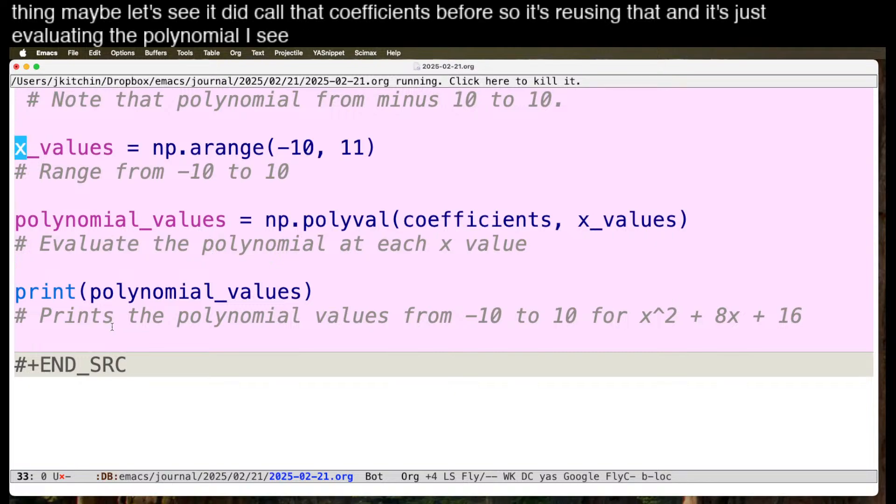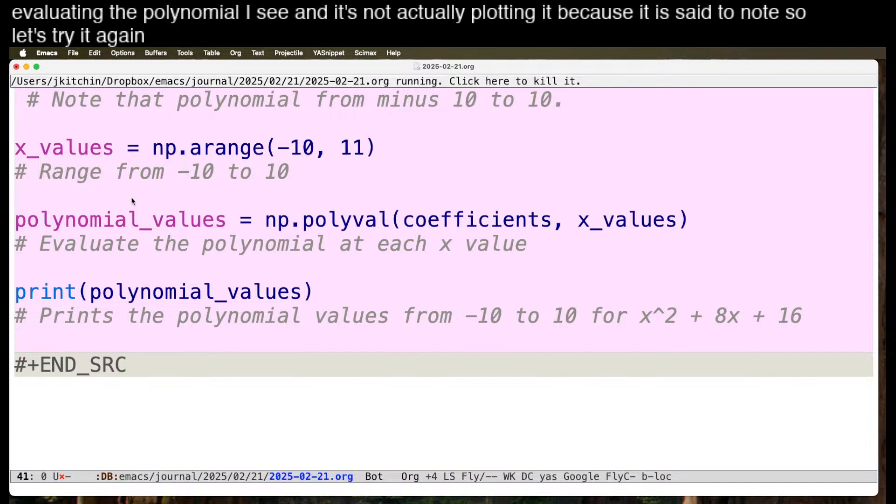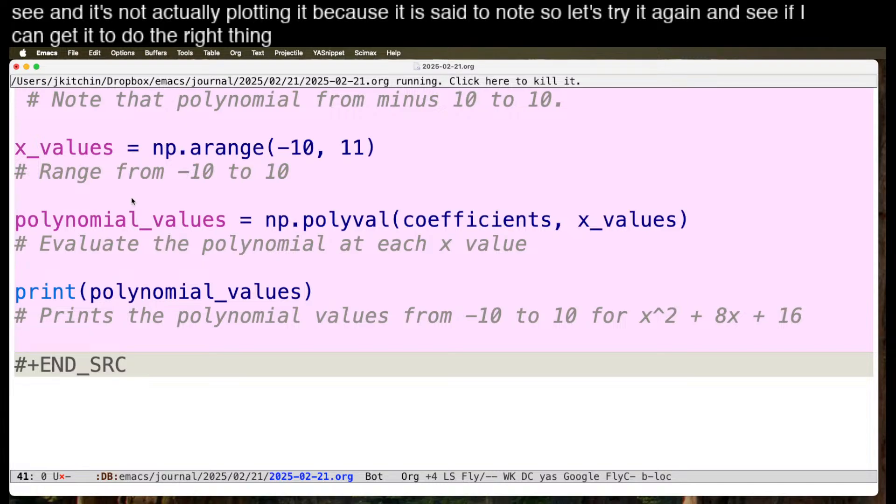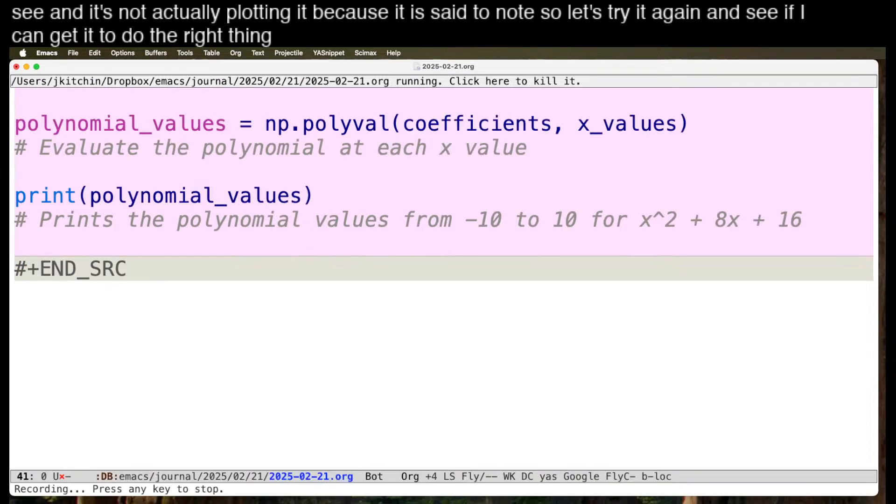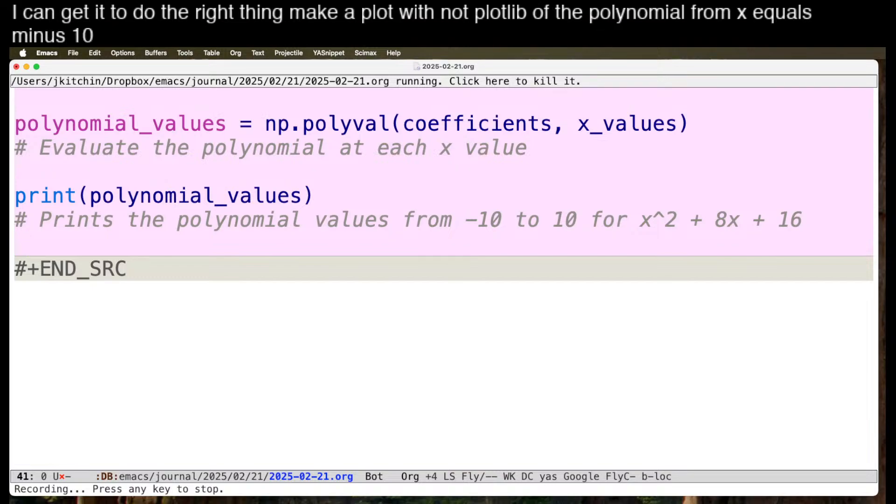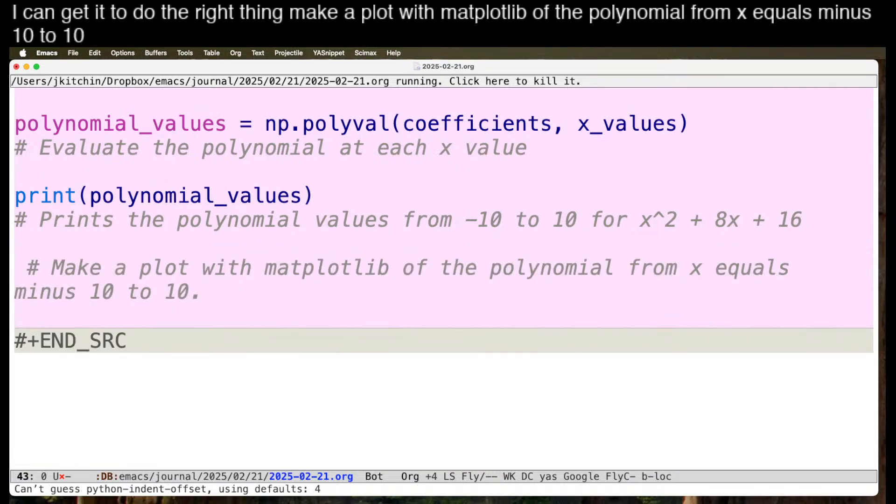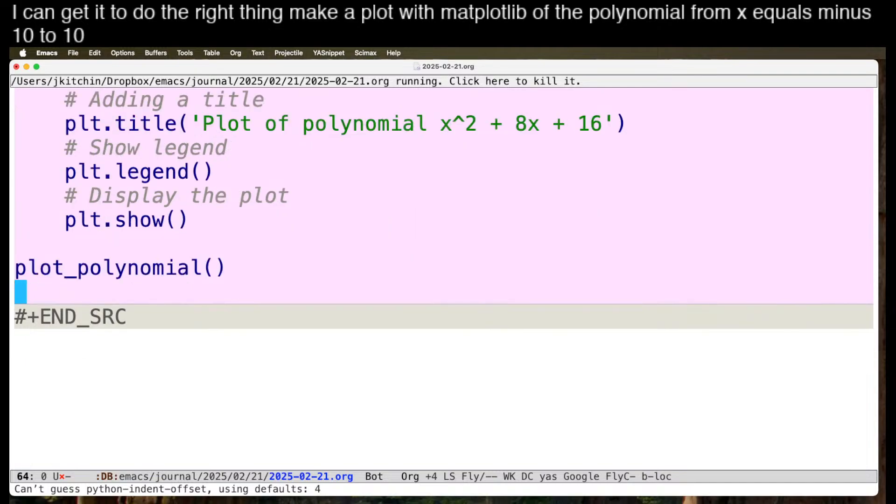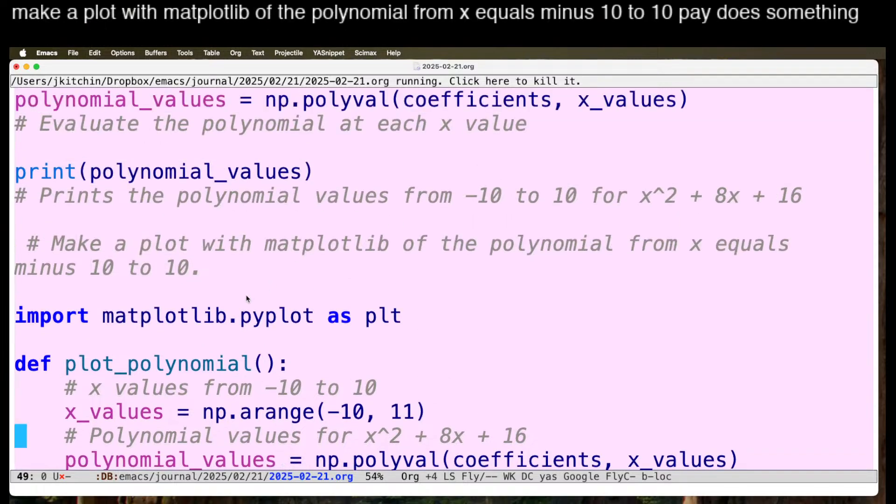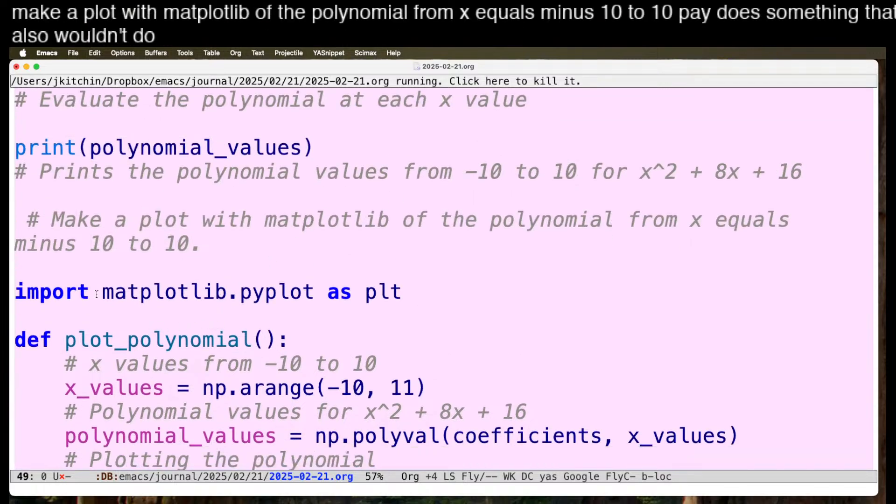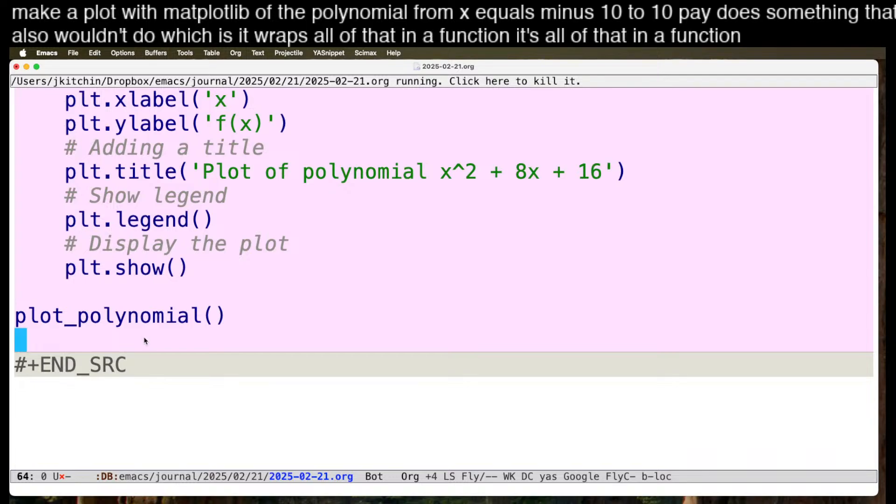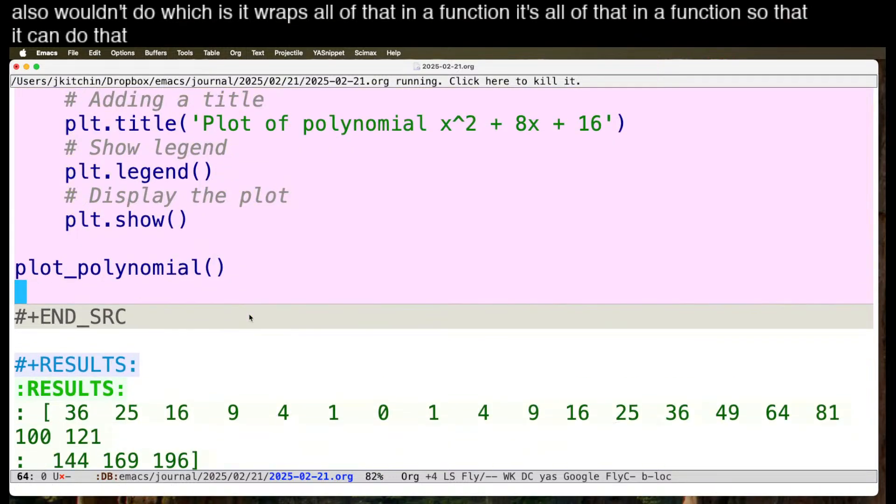I see, and it's not actually plotting it because it is said to note. So let's try it again and see if I can get it to do the right thing. Make a plot with matplotlib of the polynomial from x equals minus 10 to 10.